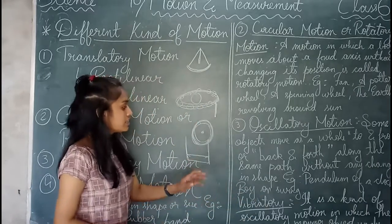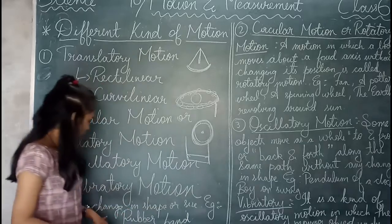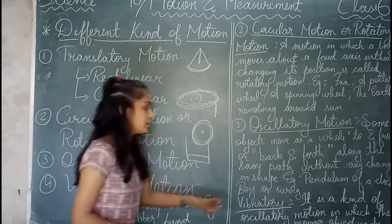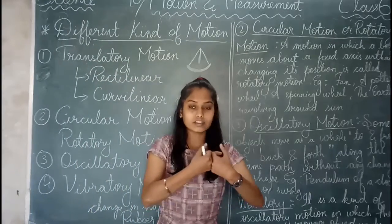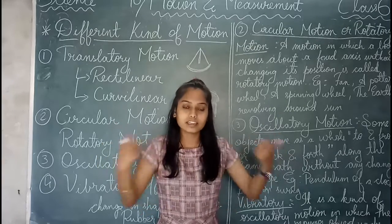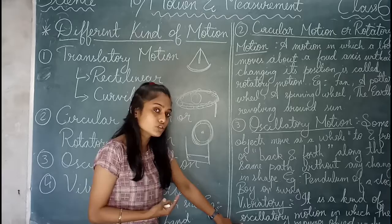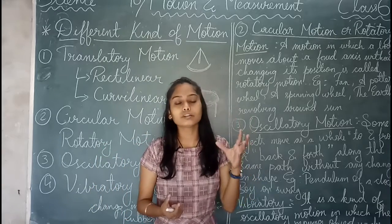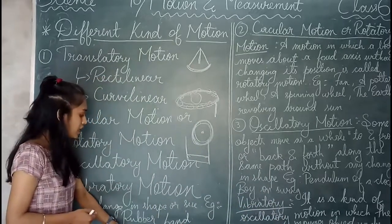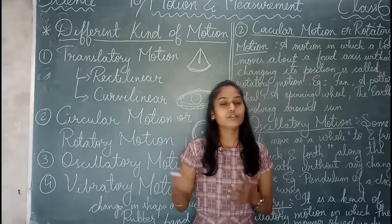Vibratory motion is a kind of oscillatory motion in which the moving body undergoes a change in shape or size. For example, if we take an elastic rubber band and stretch it, its size changes. When we release it, it contracts — its shape and size change. That sensation we feel is vibratory motion. Here we have completed all four types of motions. In further lessons, we will discuss them in detail. Thank you.